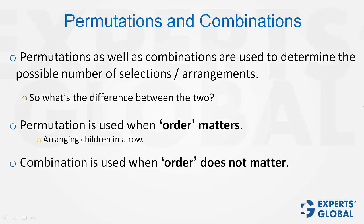Combination is used when order does not matter. For example, selecting a team of 11 from a pool of 20 — it's only about which 11 out of those 20 people are being selected, not about the order. Therefore, the answer in this case would be 20C11.